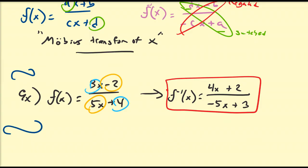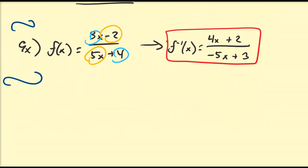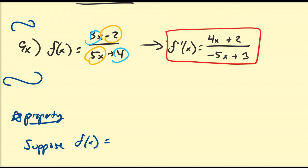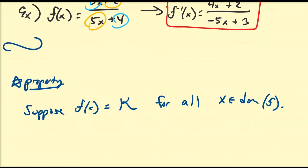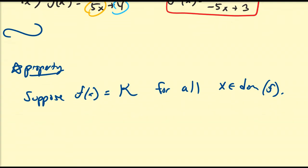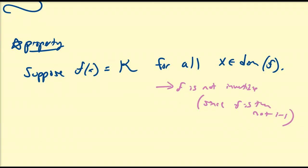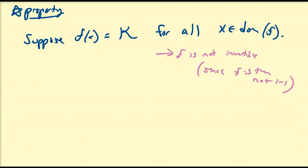Now here's an important property that will come in handy when you study applications of the Möbius transform. Let's assume that f of x is equal to a constant for all values x in the domain of f — so it's always a constant function. If it's a constant function, then an easy result is that f is not invertible, and that's easily provable since f is then not one-to-one. So how can we figure out if the function is constant just from the constants a, b, c, and d? That's what we're going to find here.